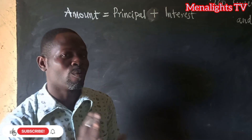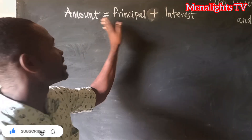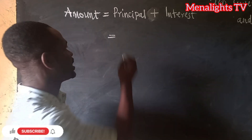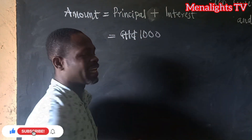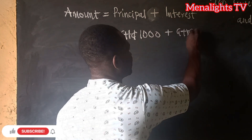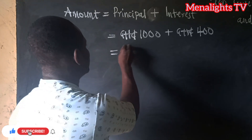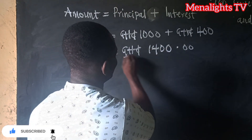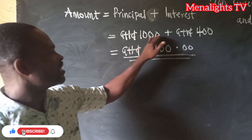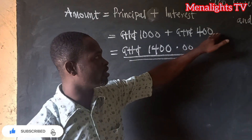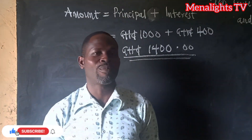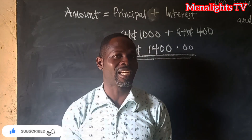The total amount William will have at the end of two years is the principal plus the interest: 1,000 + 400 = 1,400 cedis. Thank you so much for watching today's episode. Remember to subscribe to Menalize TV for more updates.